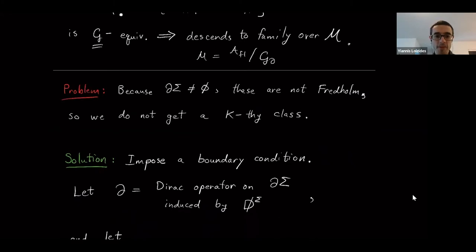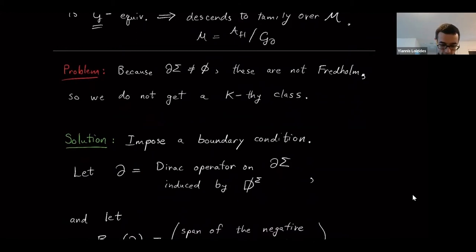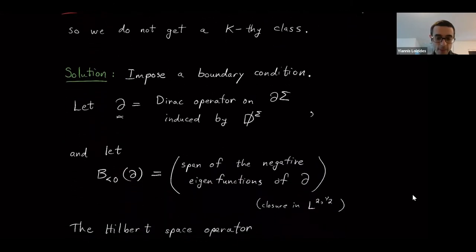There's a standard way to fix this: impose a boundary condition. The boundary condition I'm going to impose is what's called the Atiyah-Patodi-Singer boundary condition. It's a particularly simple case because we're talking about a surface — the boundary is just a circle. I'll write del-partial for the Dirac operator on the boundary induced by the Dirac operator on the surface. The spin structure on the surface induces a spin structure on the boundary, and an interesting fact is that the non-trivial spin structure on the circle is the one we're using here.